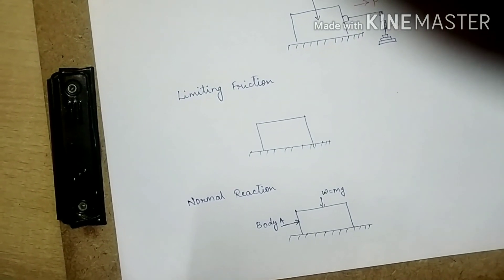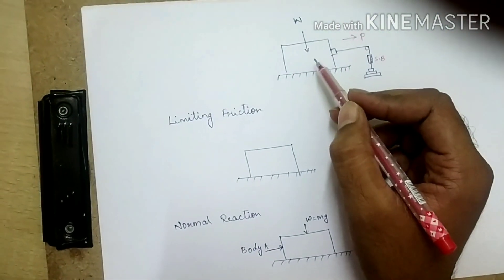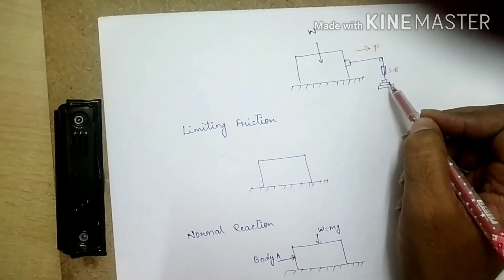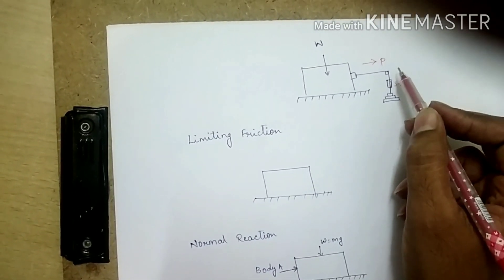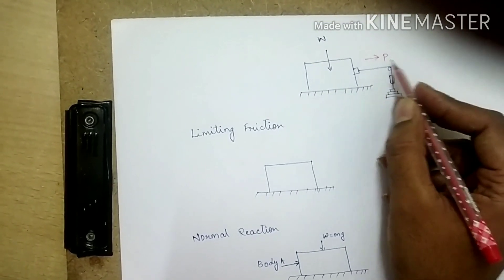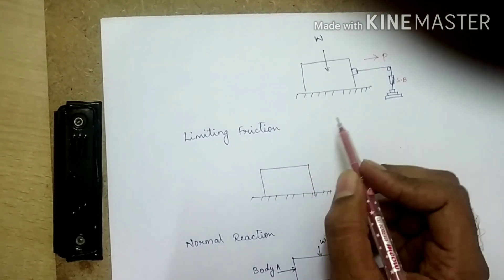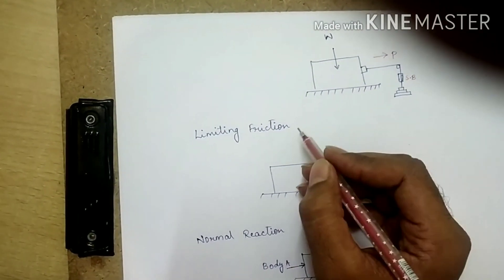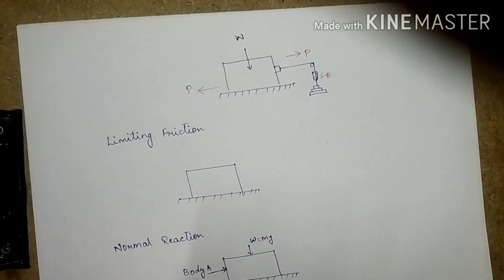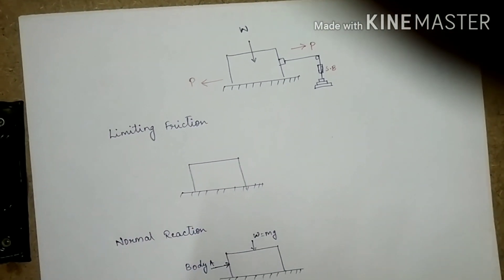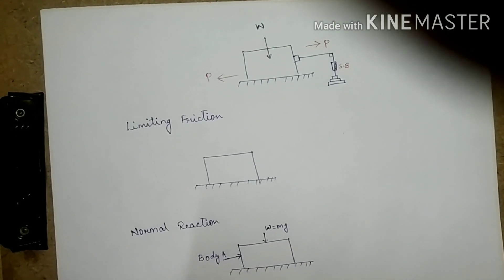When the weight is gradually increased, the block will start to move. Initially, whatever weights you apply are being overcome by friction. When the applied force is greater than the frictional force, the body will start to move in the direction of force P. Friction always acts in the opposite direction of the body's movement. The major cause of friction is the microscopic roughness of the contact surface — there is no surface which is perfectly smooth.